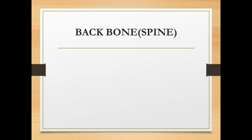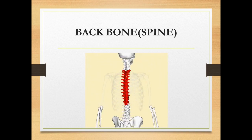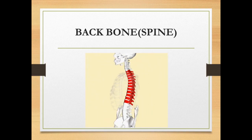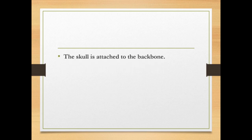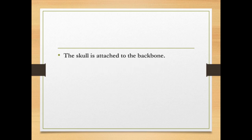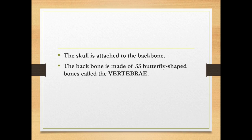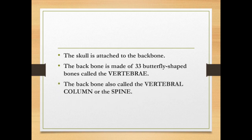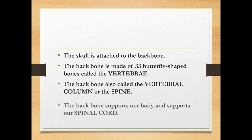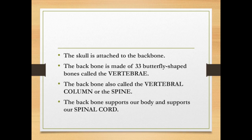The skull is attached to the backbone. The backbone is made of 33 butterfly-shaped bones called the vertebrae. The backbone is also called the vertebral column or the spine. The backbone supports our body and also supports our spinal cord.